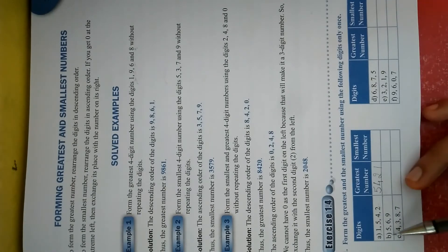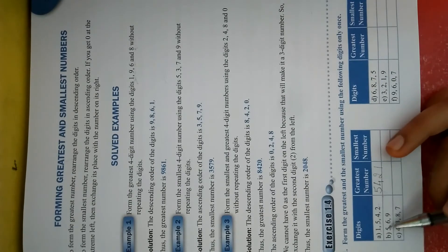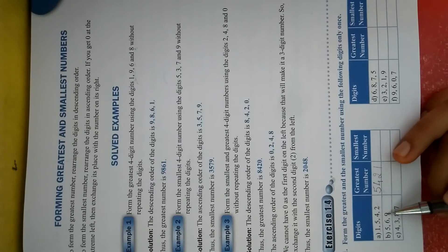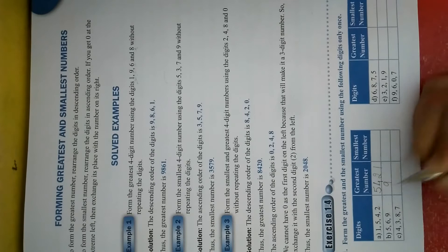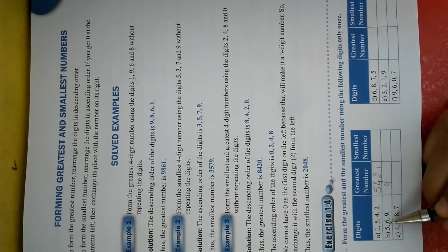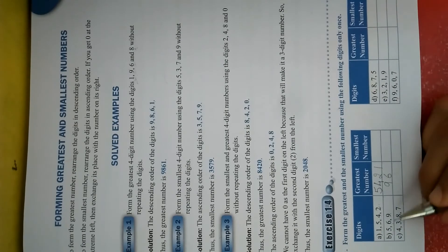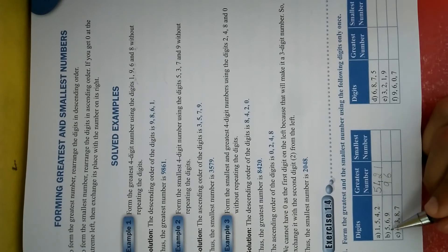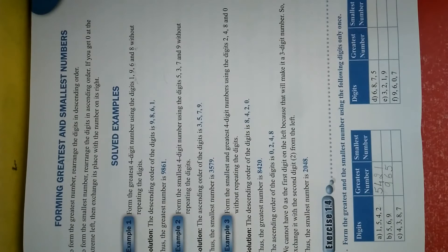Now the second question — the greatest number from those digits. The digits are 5, 6, and 9. Among these, 9 is clearly the largest, so we write 9 first. Remove 9. Remaining: 5 and 6. Among these, 6 is larger. Write 6. Now only 5 is left, so we write 5. So by arranging in decreasing order from big to small, we can form the greatest number. It is very easy.